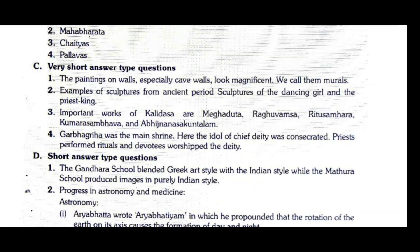Question two: Give some examples of sculptures from the ancient period. Answer: Examples of sculptures from the ancient period include sculptures of the Dancing Girl and the Priest King.